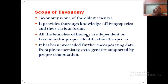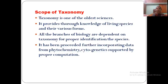Regarding the scope of taxonomy: it is the oldest science, it provides thorough knowledge on living species, and all other branches of biology depend on taxonomy. For example, if a student wants to prepare a medicine from a plant, they first need to know the plant's scientific name and confirm it is the right plant — and for that they need taxonomy. Similarly, for studying a plant like Catharanthus roseus, the first requirement is its scientific name and description before exploring pharmaceutical aspects.